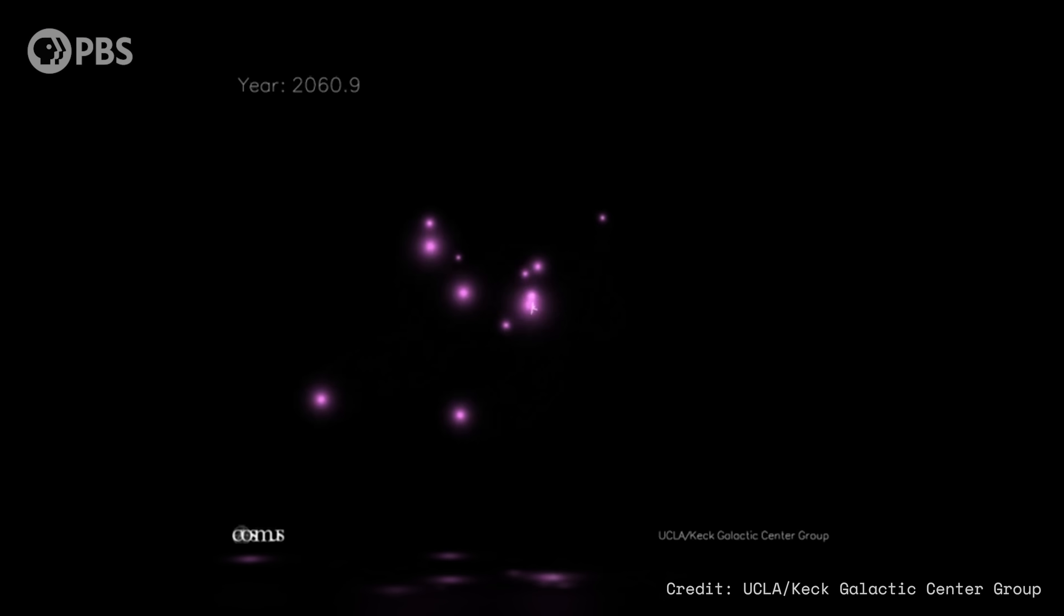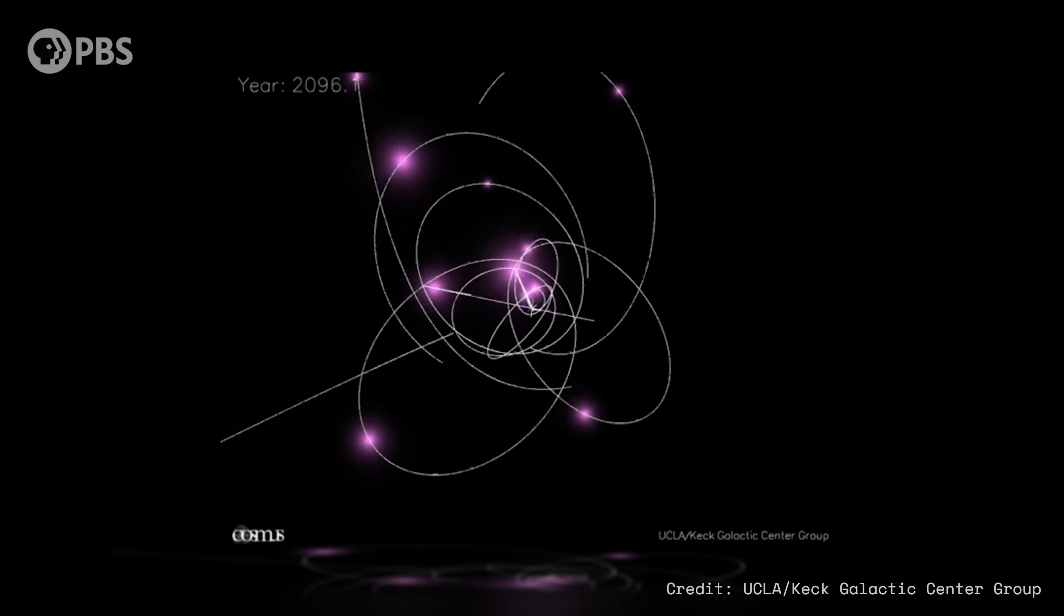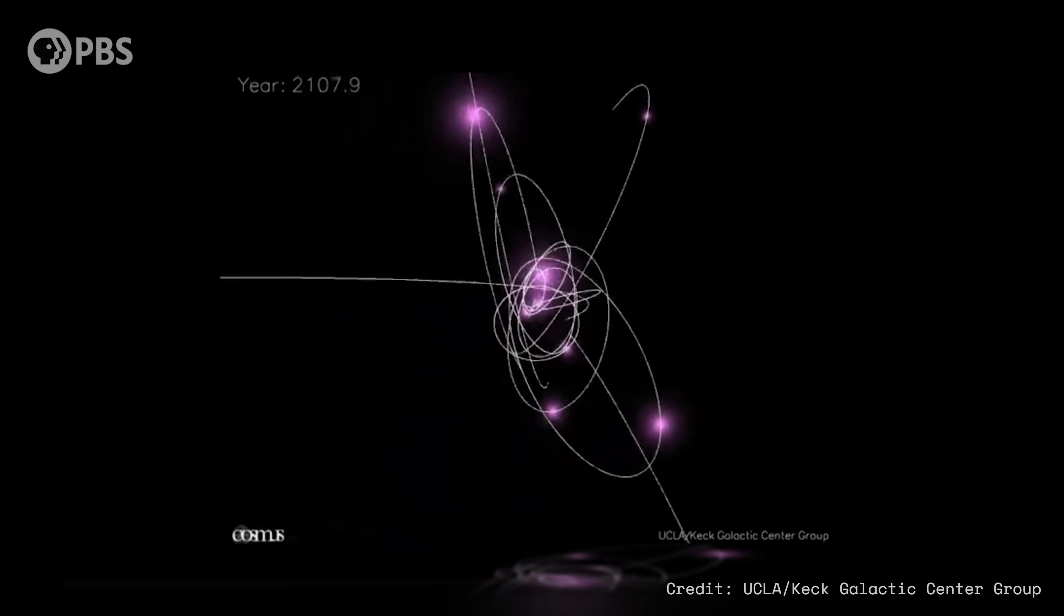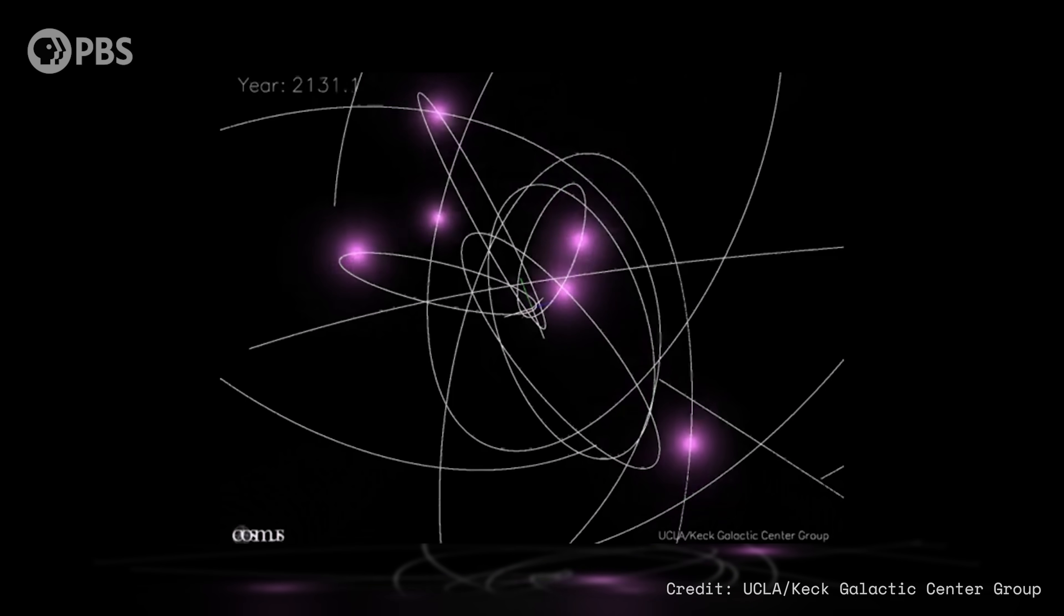If you track the motion of individual stars in the ultra-dense star cluster at the very center of our Milky Way galaxy, you'll see that they swing in sharp orbits around some vast but invisible mass.